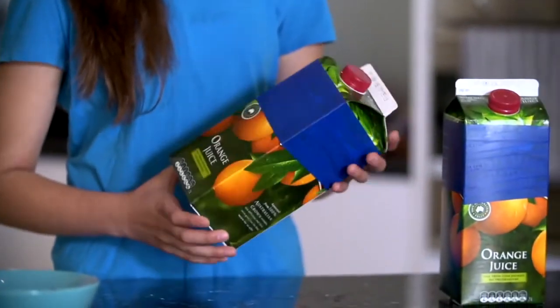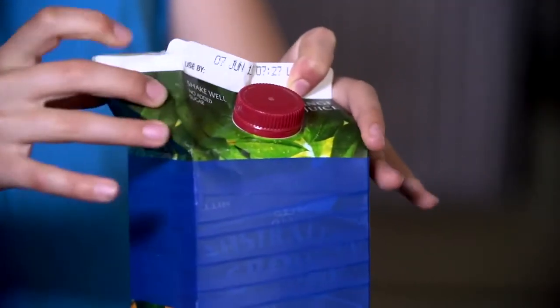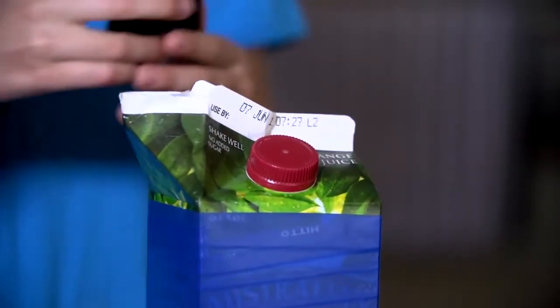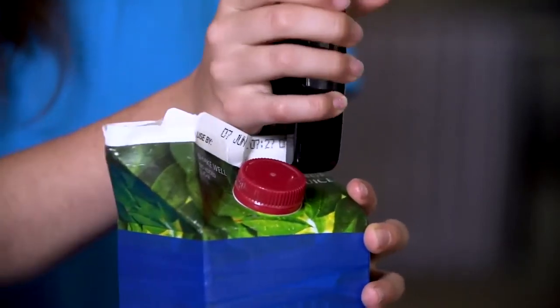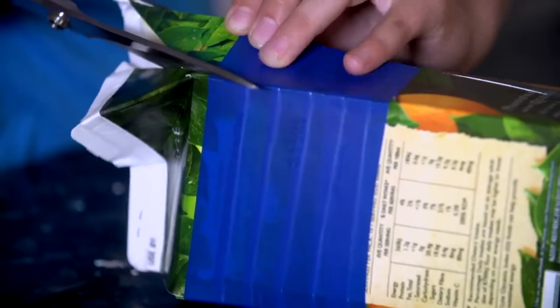First we need to make our test areas. We do this with clean empty juice containers. Fold out the spout, staple the closed edge, lay on its side and cut away the top and spout like this.